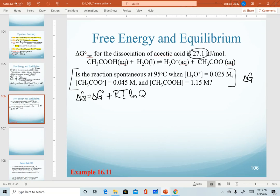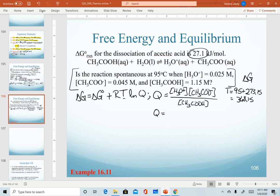We are given a different temperature, so we do need to calculate that. Temperature is going to be 95 plus 273.15, which will give us a value of 368.15. We also need to set up our Q. Remember that Q is going to be set up as products over reactants, everything raised to the exponent of its coefficient. Everything is a 1 in this equation.